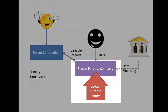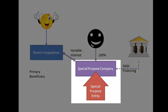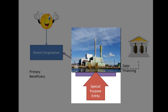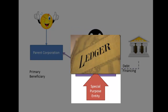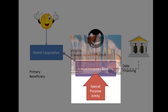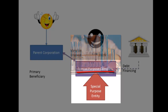Special purpose entities, or SPEs, are structured entities designed to carry out a very specific activity. For example, an SPE might hold a plant that it leases back to the parent company. It might hold accounts receivable of the parent company, in which case the activity is to collect the receivables themselves. Or it may conduct research and development activities on behalf of the parent company.